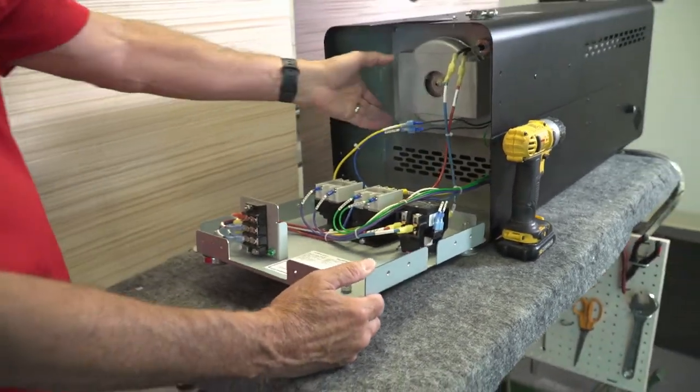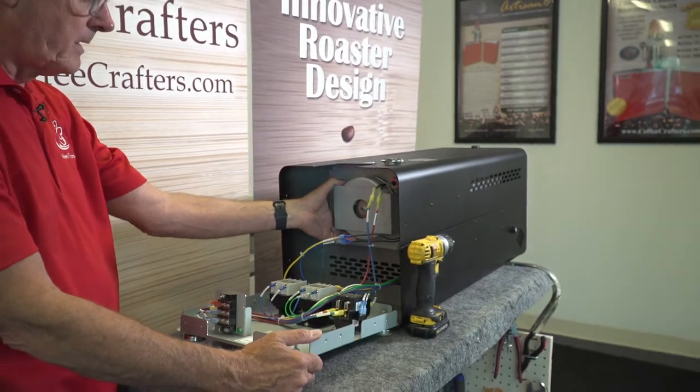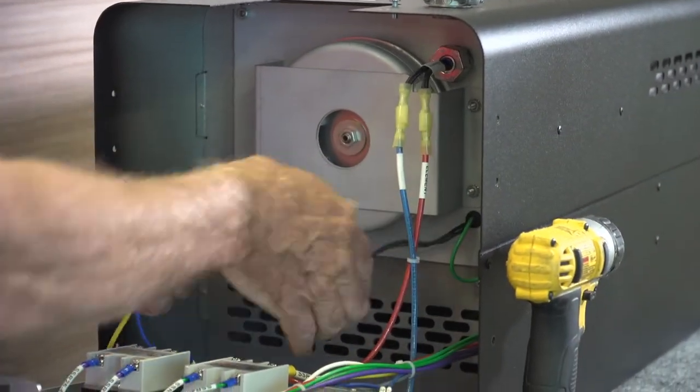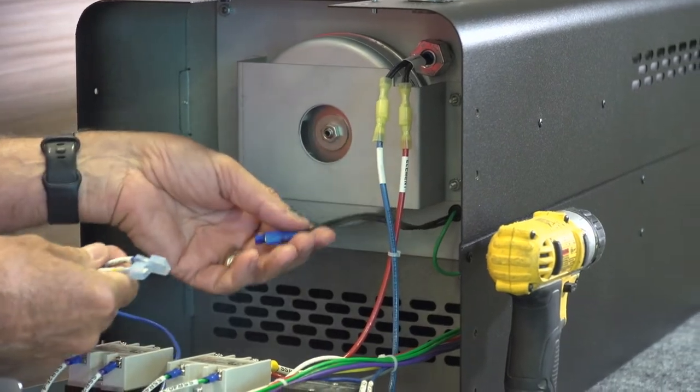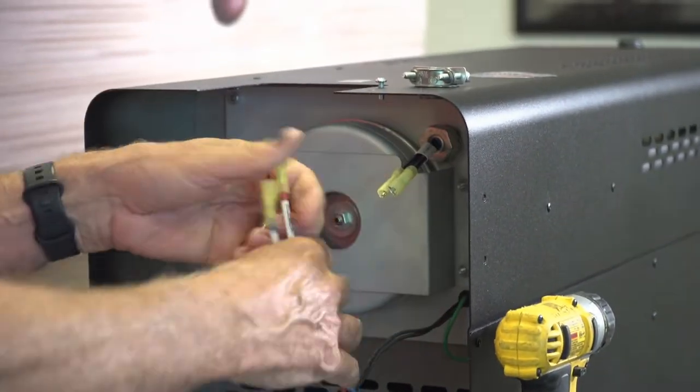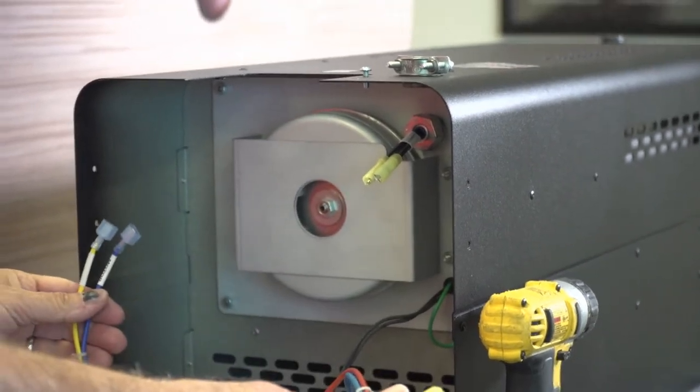When we get inside, we see the loft motor sitting in there. We're going to unplug the motor leads first and then we're going to unplug the heat element leads. Those are the two things that plug into the roaster.